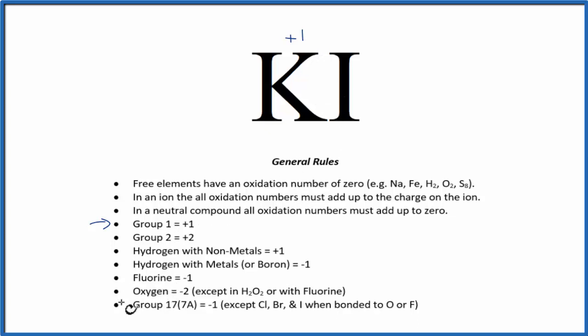Iodine, as we go down, iodine is in group 17, sometimes called 7A, and it has an oxidation number of minus 1, except in a few instances. So here, we have oxidation number on the iodine, and KI is minus 1.